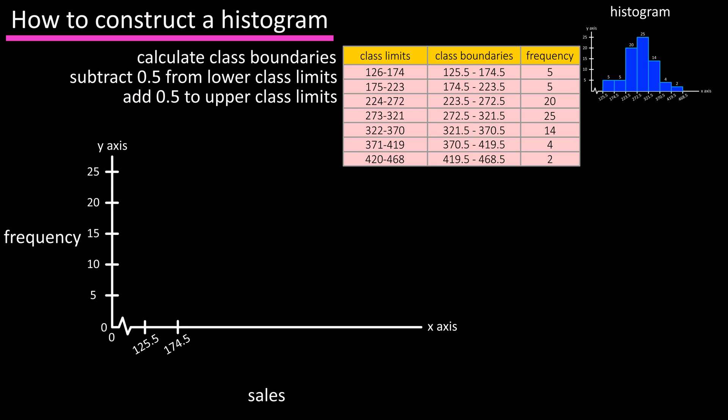Next we need to mark the class boundaries for class 2 on the x-axis. Since the upper boundary of class 1 and the lower boundary of class 2 are the same, that value has already been marked. So we then mark 223.5 which is the upper boundary for class 2. When you mark this, you want to make the mark so the width of class 2 is the same as the width of class 1 on the x-axis, like this.